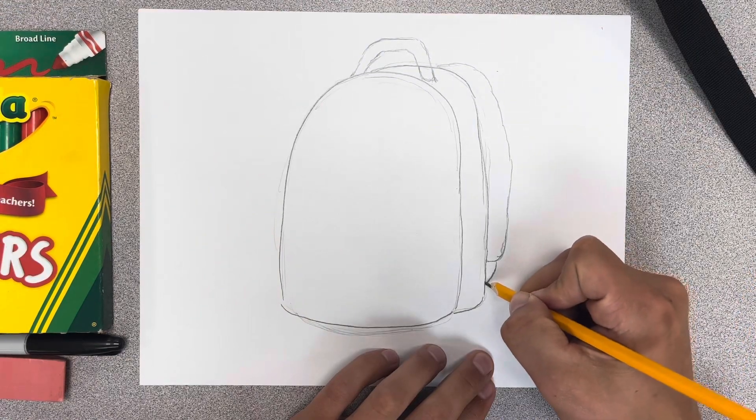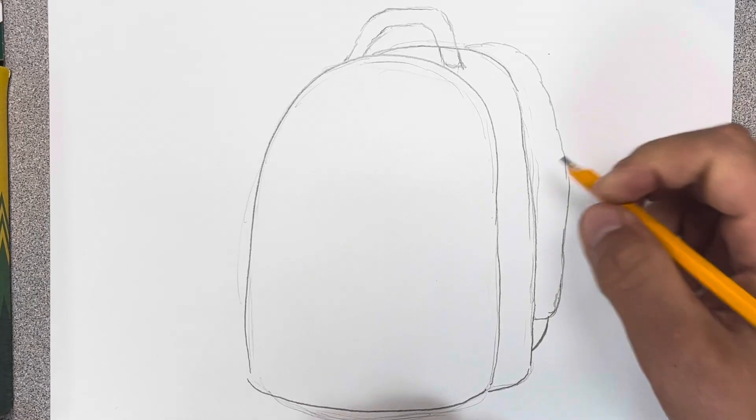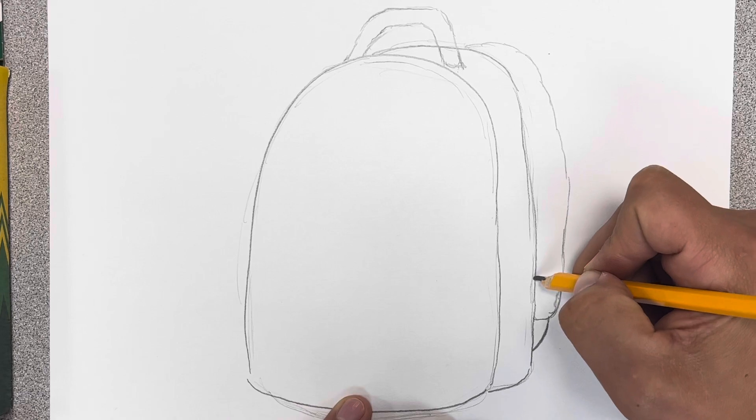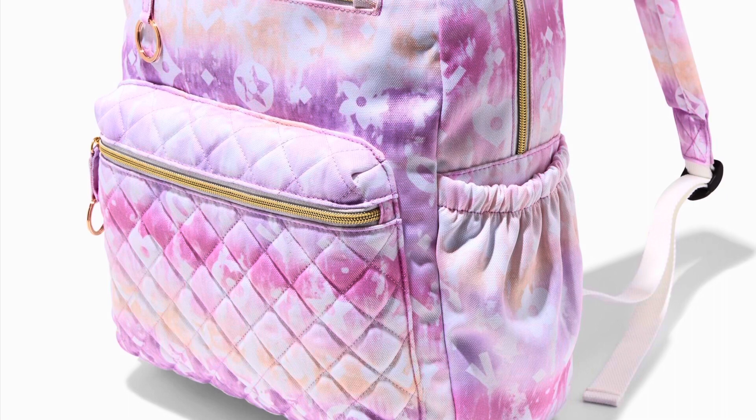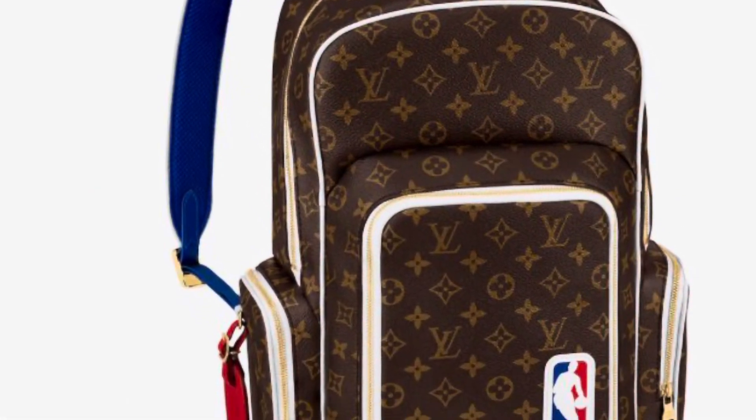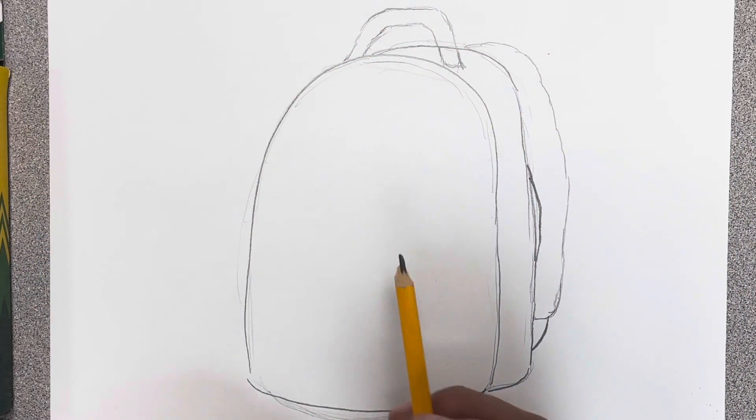For that thin one, you can just kind of connect that with that extra piece there. And then if you want, depending on how wide your strap is, you can add a little curve on that side to give it a little bit of gap, or a little bit of distance in between the backpack and the bag. Okay, that looks nice.